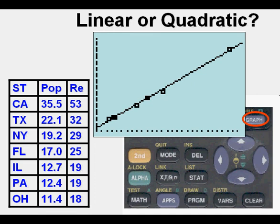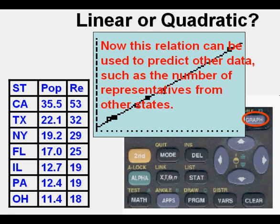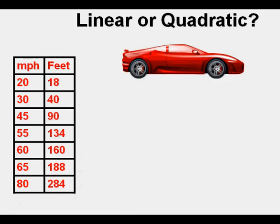Now we're going to go to a problem that is a real-world use problem. And the state of Missouri determined through its studies that the distance a car takes to stop depends on how fast that car is going when it stops.